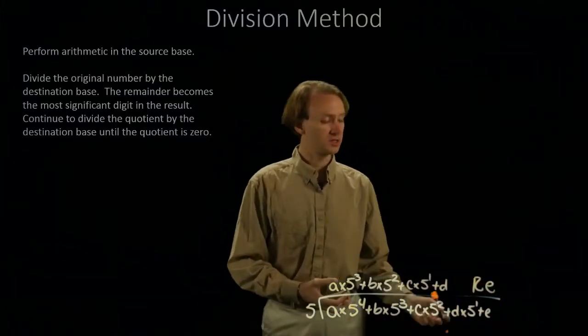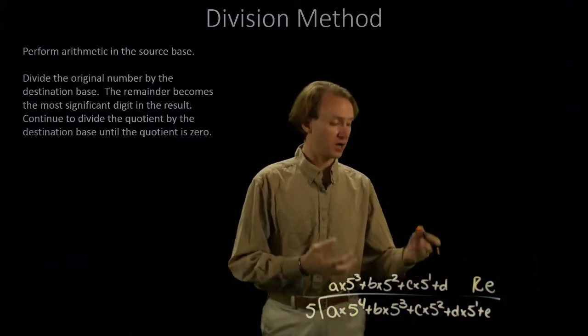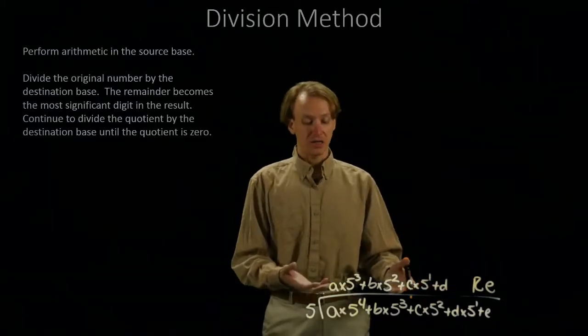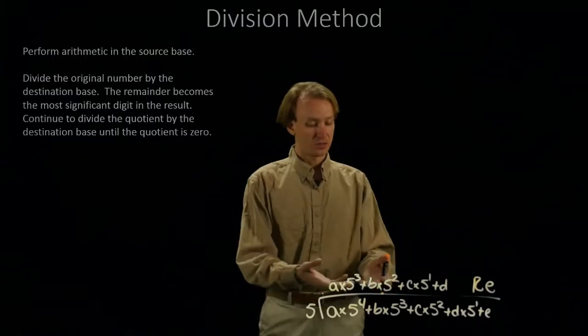Now, I have the least significant digit from my result. And I can go back and I can start again and do division on my new quotient.